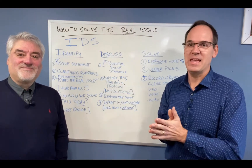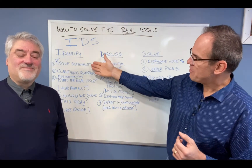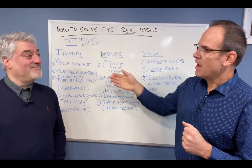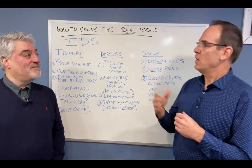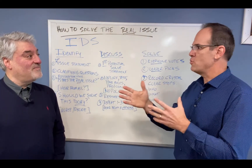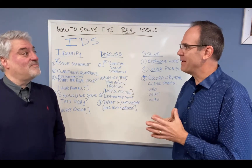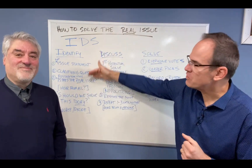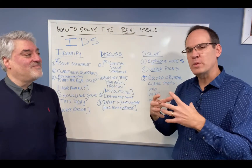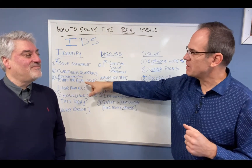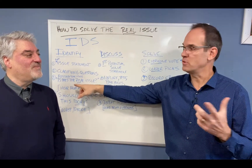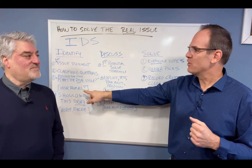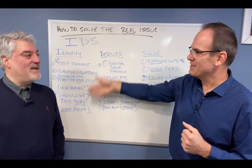The first one is identification. You have the first issue statement — somebody makes a blanket statement, like 'Bob is lazy.' The team asks clarifying questions: What? Whom? Why? Tell me more — that kind of thing. The third step is to restate the issue. Once you've heard the clarifying questions, you'll get a sense for what the real issue might be. Somebody's got to restate it: 'Is this the real issue?' And you've got to hear from everybody in this section.